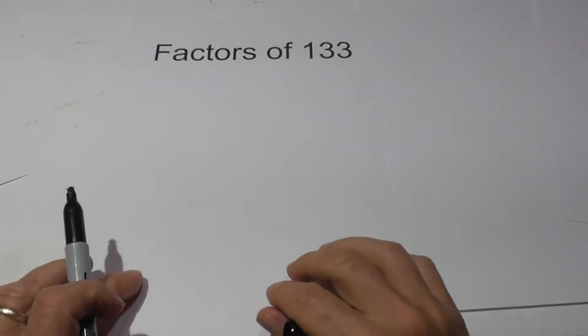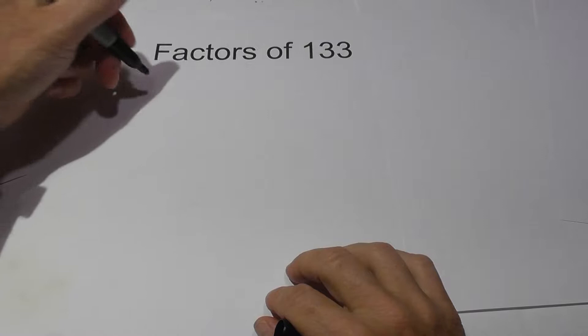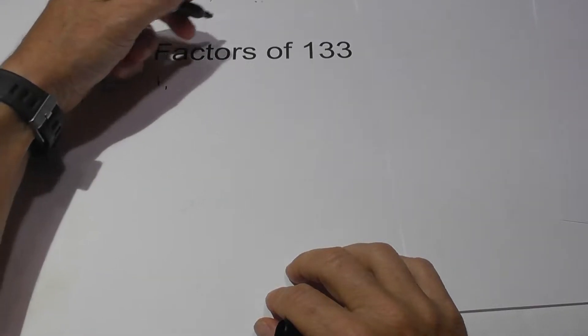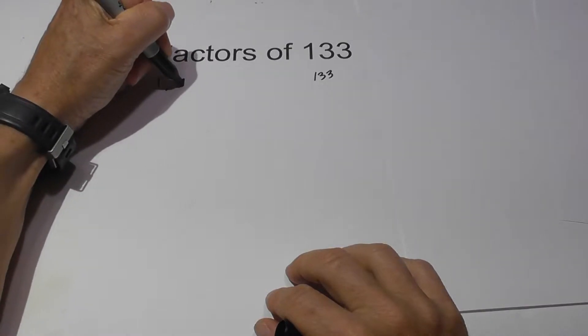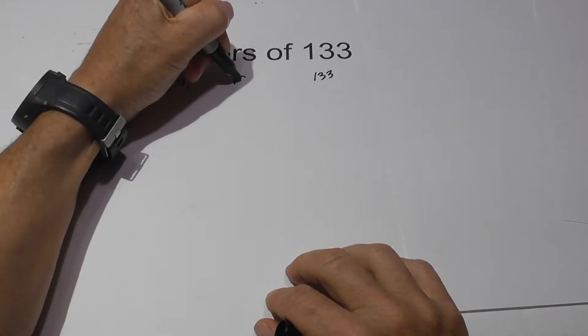Welcome to Moving Math and Science and the Factors of 133. And they are 1 times 133. Next we have 7 times 19.